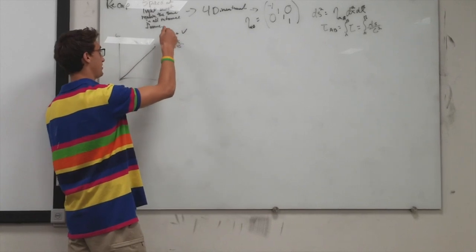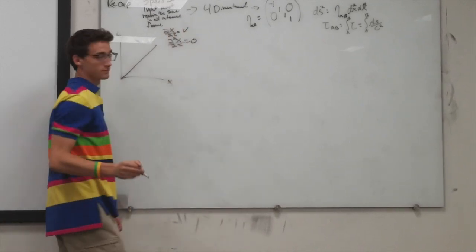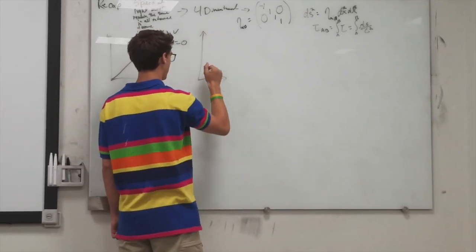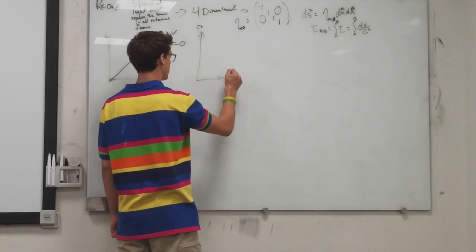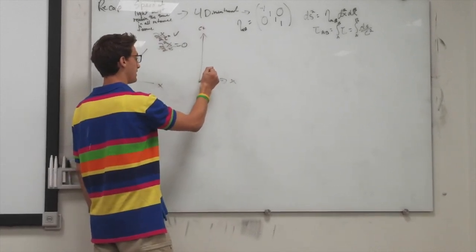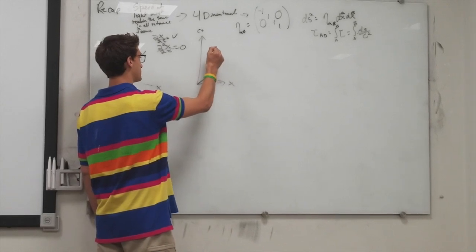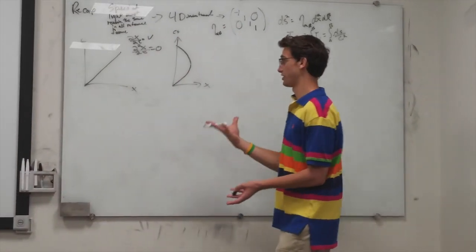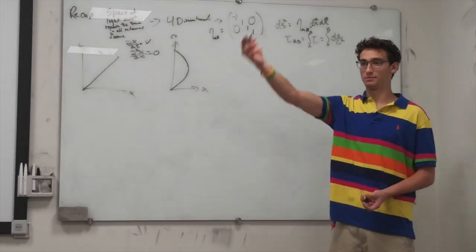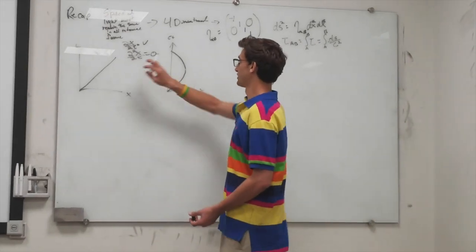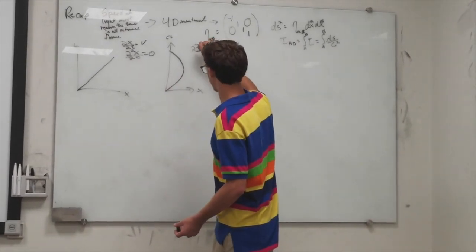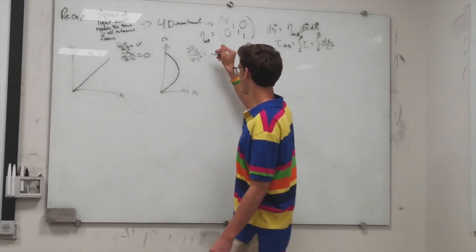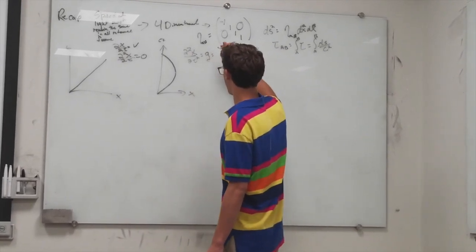Now if you throw a ball in a gravitational field, what happens is you throw a ball, it decelerates, stops, and comes back down. This is due to what we know as gravity. Gravity lifts up objects and brings them down to the ground. Now we have some acceleration represented by g, which is the derivative of the potential.